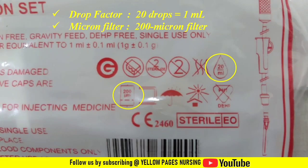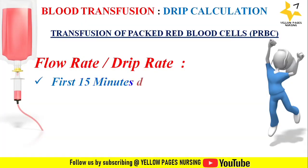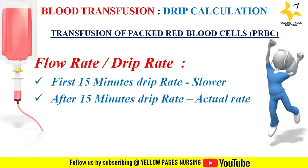Now let's discuss the flow rate or drip rate. Blood transfusion should begin at a slower rate for the first 15 minutes, because moderate to severe blood reactions occur during the first 15 minutes of blood transfusion. After 15 minutes, the drip rate should be as calculated or as prescribed, but the flow rate should be adjusted according to the volume that the patient's circulatory system can tolerate.